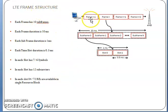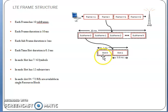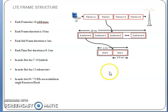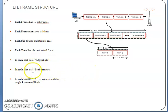To summarize: one frame is divided into 10 subframes. One subframe is divided into two slots of 0.5 milliseconds each. One RB equals 84 resource elements if using normal cyclic prefix (12 × 7), and 72 resource elements if using extended cyclic prefix (12 × 6).